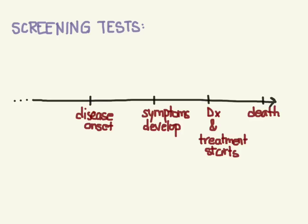They are asymptomatic up until some point, and then that's when the symptoms develop. Then at some point they decide to put off going to the doctor. They finally go to the doctor, they get a test done, and their diagnosis and treatment starts until ultimately they die from this disease.